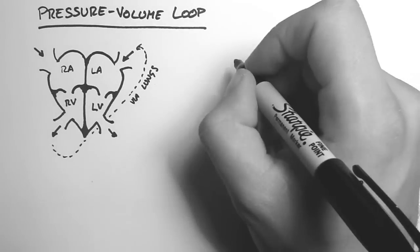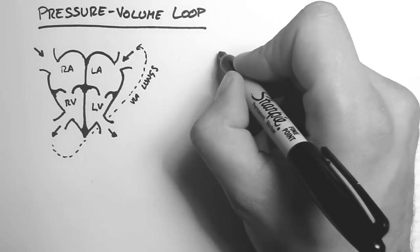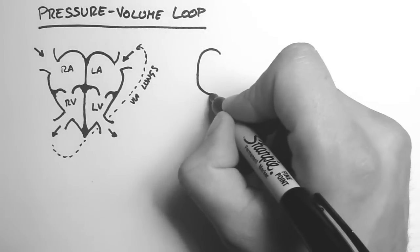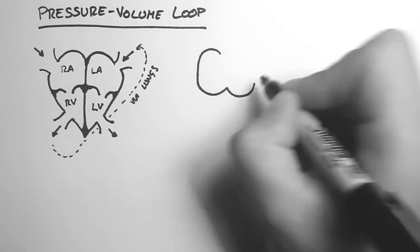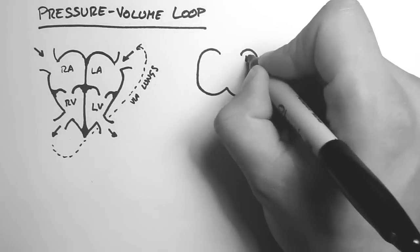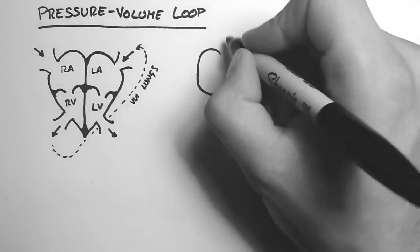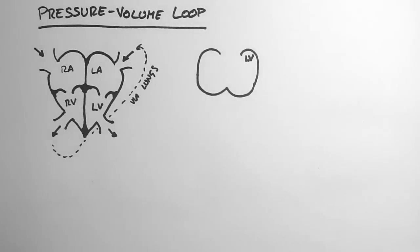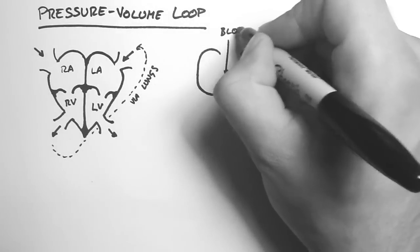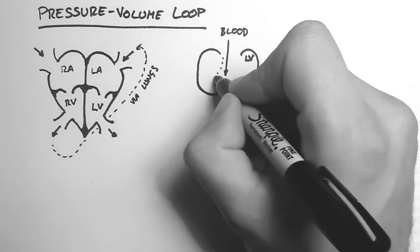So I'm going to draw up a more schematic version of the left ventricle here. So this is the left ventricle. And blood comes in from the left atrium like this.